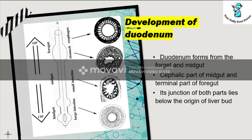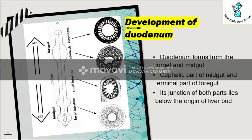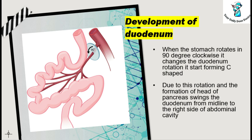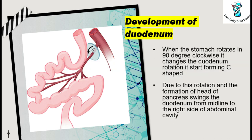To summarize, the duodenum develops from both the foregut and the midgut — the cephalic portion of the midgut and the terminal portion of the foregut. Their junction lies below the origin of the liver bud. When the stomach rotates 90 degrees clockwise, it also impacts the duodenum, causing it to rotate and form a C-shape. Due to this rotation and the formation of the head of the pancreas, the duodenum swings from the midline to the right side of the abdominal cavity.